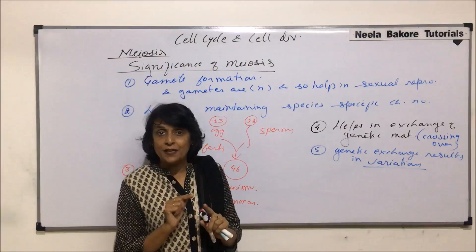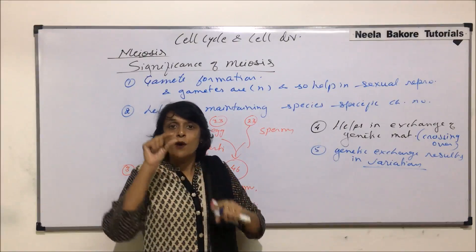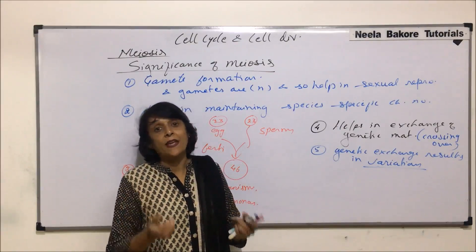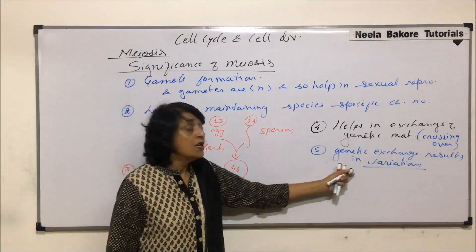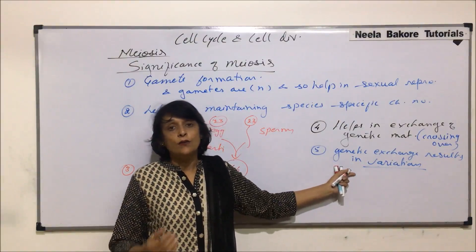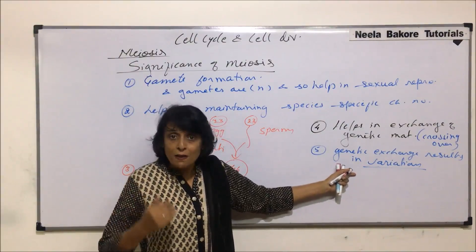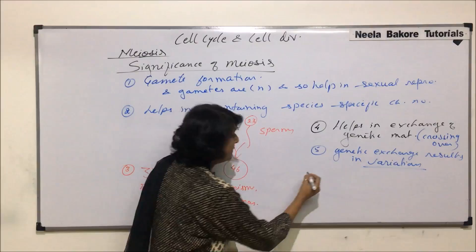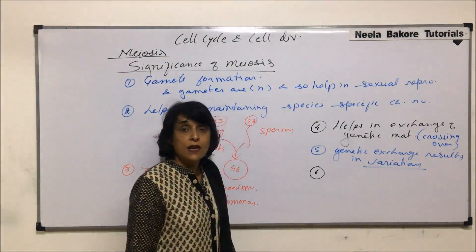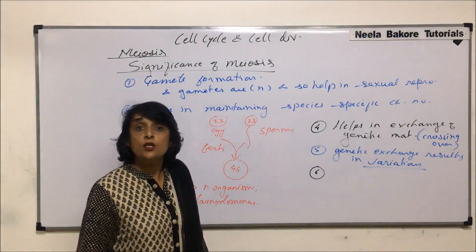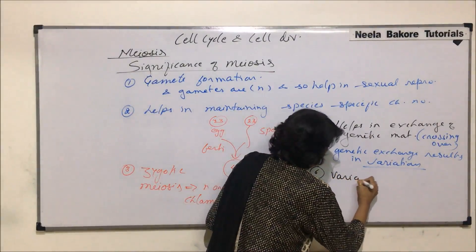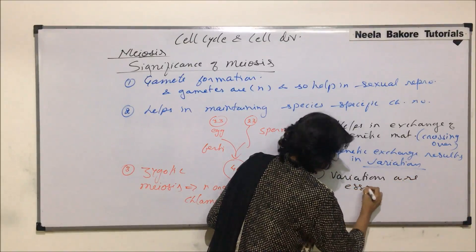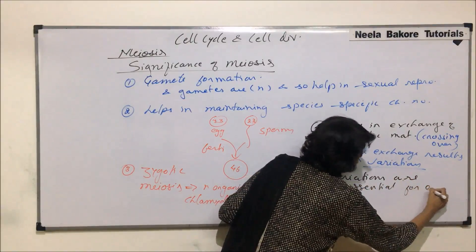Where exactly crossing over takes place matters: if it takes place only at the tip, only those genes get exchanged; if it takes place at two places, more genetic material gets exchanged and there would be more variations. That is how children differ from their parents, and siblings also differ from each other. Variations are very essential for evolution.